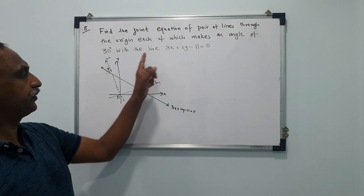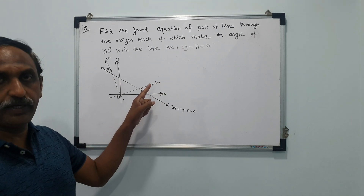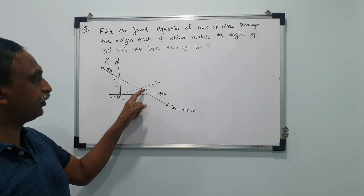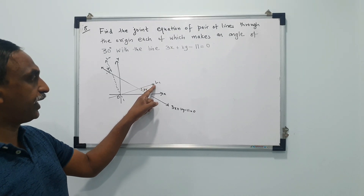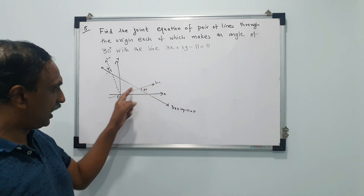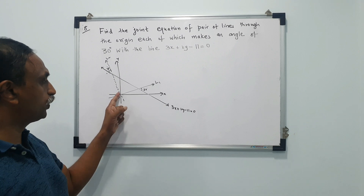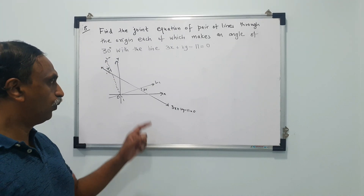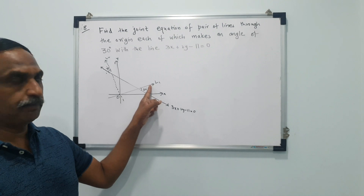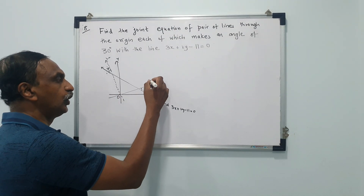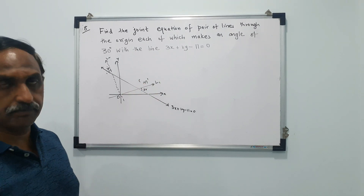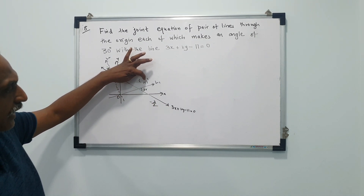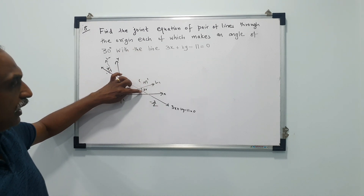See the diagram: this is the line given to you, and we need to find the combined equation of two lines which pass through the origin and make 30 degrees with it. L1 and L2 both pass through the origin and each makes an angle of 30 degrees with the given line. We need to find the combined equation of L1 and L2. Let the slope of line L1 be M. The slope of the given line is -3/2, and the angle between them is 30 degrees.